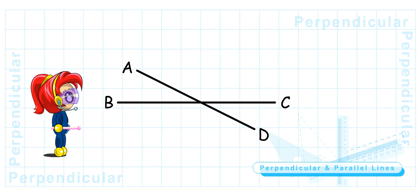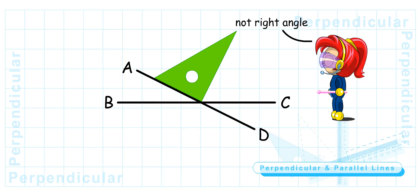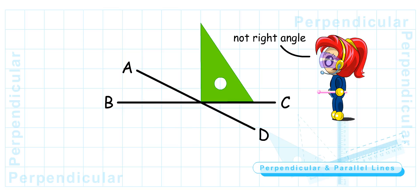One more pair of lines for you to check if they are perpendicular lines. I need to use my set square to test. Well, since I can't find any right angles in both line AD and BC, I can conclude that lines AD and BC are not perpendicular lines. Very good, Turbo Girl.